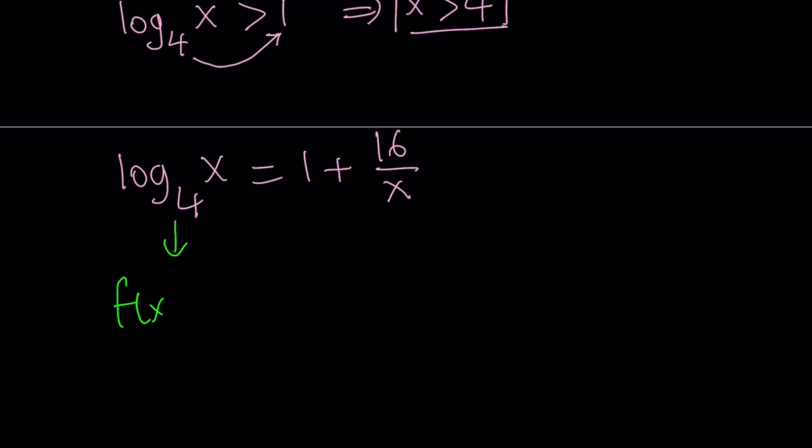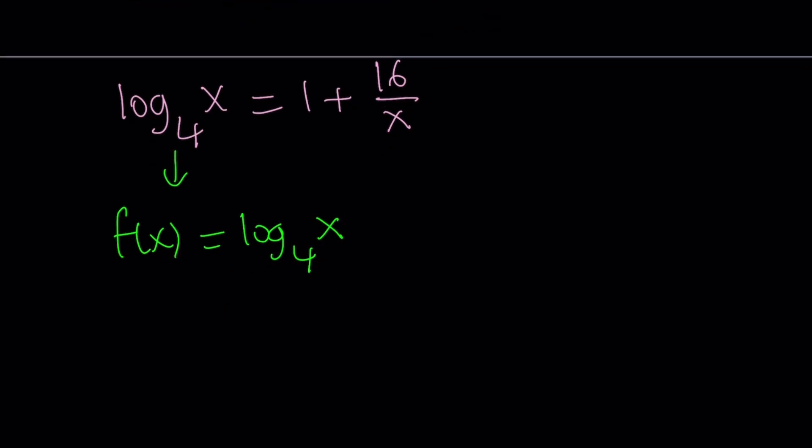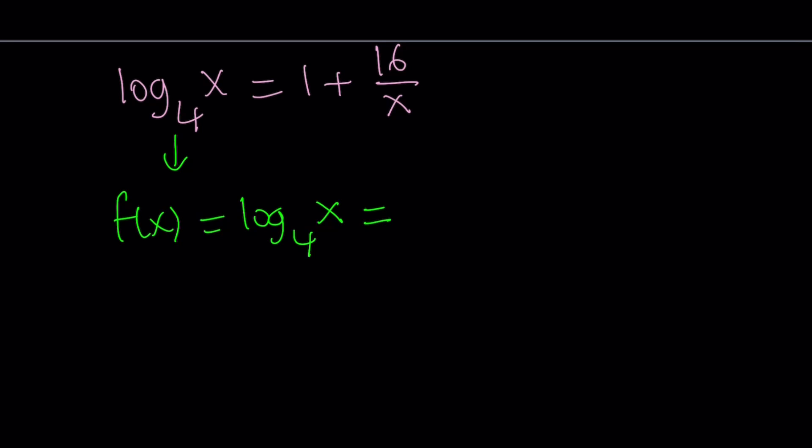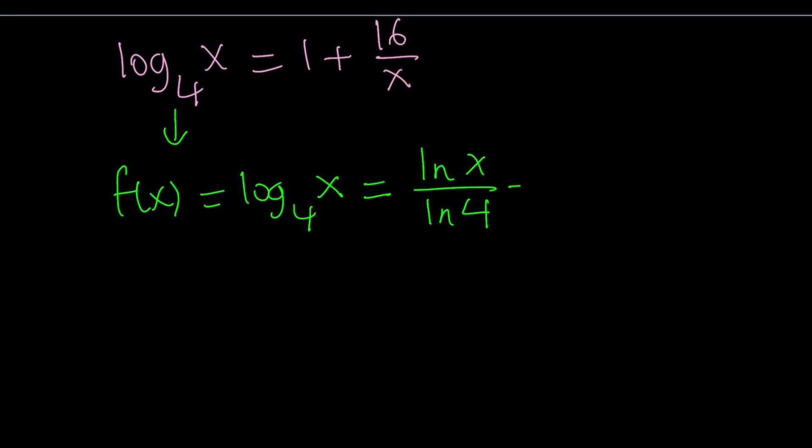So suppose f of x equals log base 4 of x. Now I want to write this using ln because I'm going to differentiate this function, and I don't really want to deal with the derivative of a log with different bases. So I'm just going to write it as ln x over ln 4 by using the change of base formula. Now 1 over ln 4 is a constant, so I don't really have to worry about it. Let's just differentiate the numerator. I'm going to find out what f prime of x is. That's the derivative. The derivative of ln x, of course x has to be positive, is 1 over x, and that is divided by the same constant. And this becomes 1 over x ln 4.